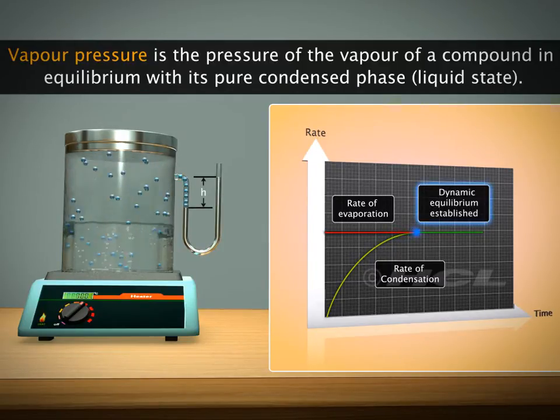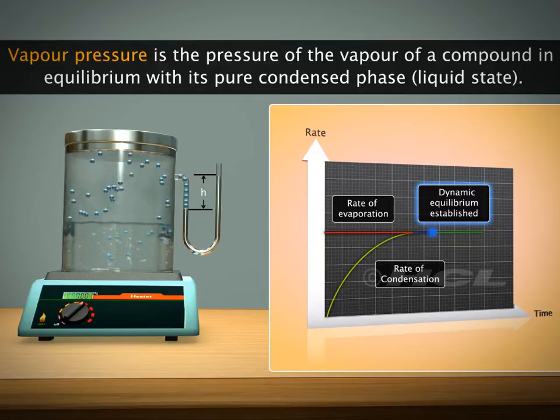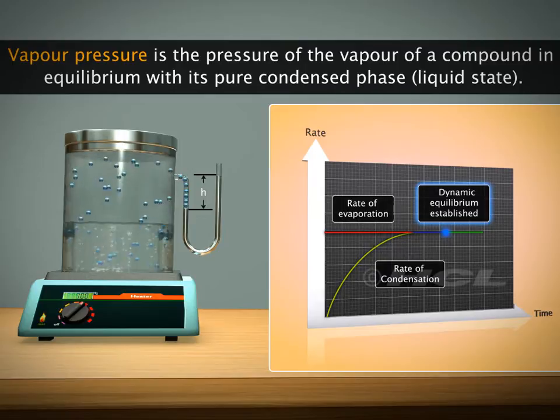Gradually a state is reached where the rate of condensation becomes equal to the rate of evaporation, or in other words equilibrium is reached between liquid state and vapor state. Vapor pressure at this equilibrium stage is known as equilibrium vapor pressure or saturated vapor pressure.